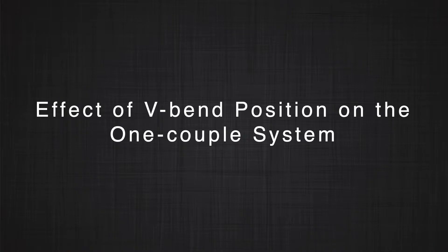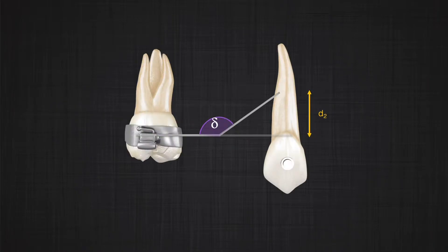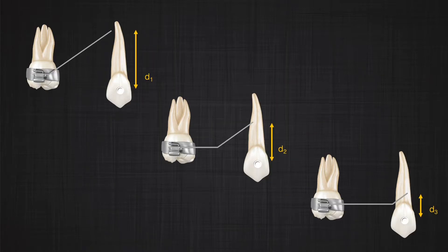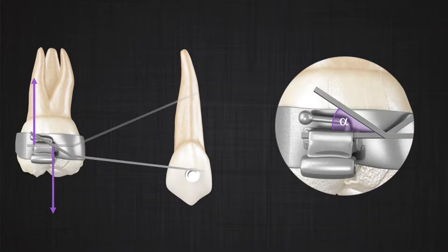What about the position of the V-bend — does it make any difference whether you put the V-bend closer to the molar, in the middle, or closer to the canine? When the V-bend is closer to the molar, the end of the wire stays farther from the canine. Bringing the wire down causes significant deflection, which increases the angle of activation significantly, increasing the magnitude of the couple and producing higher forces.